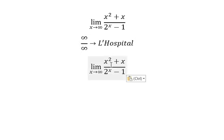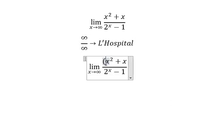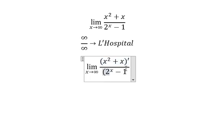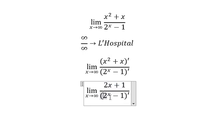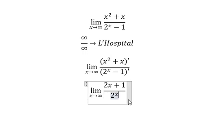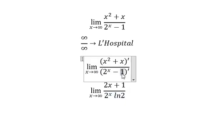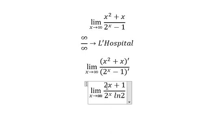That means we need to do first the derivative of the numerator and denominator. So this one we have number one, this one we have 2 to the power of s times ln2, and this one that is about the constant so you get zero.